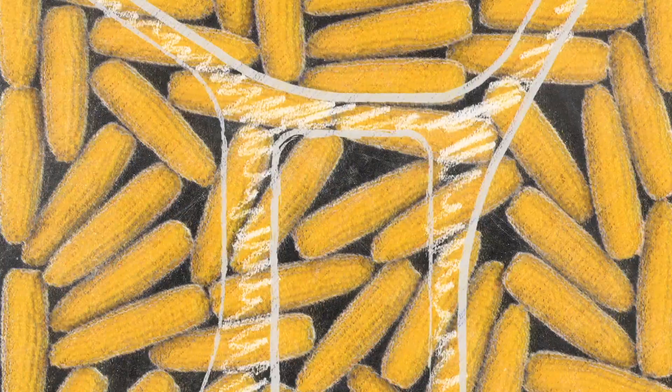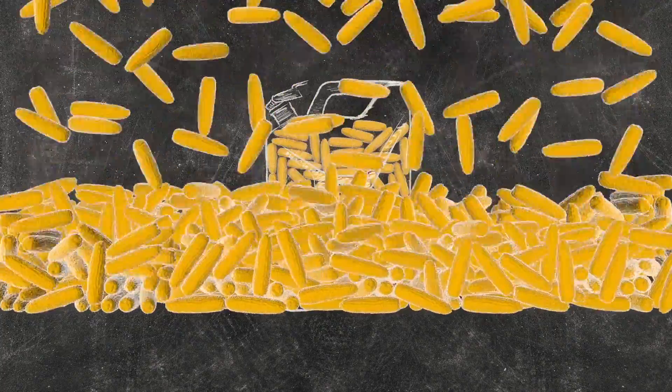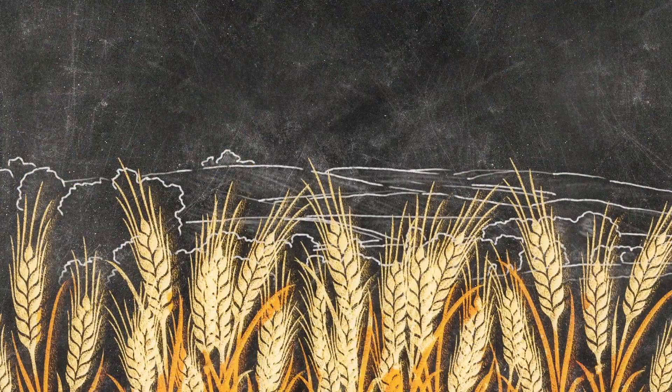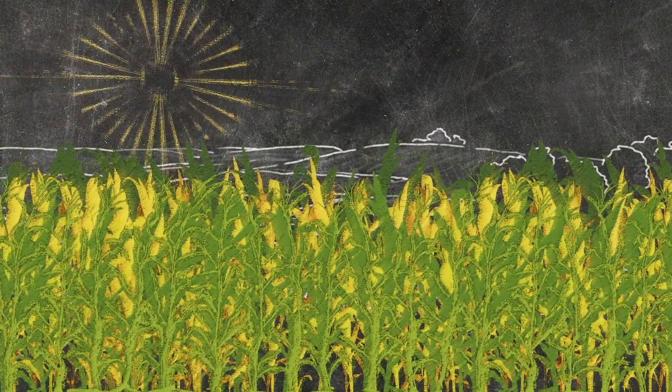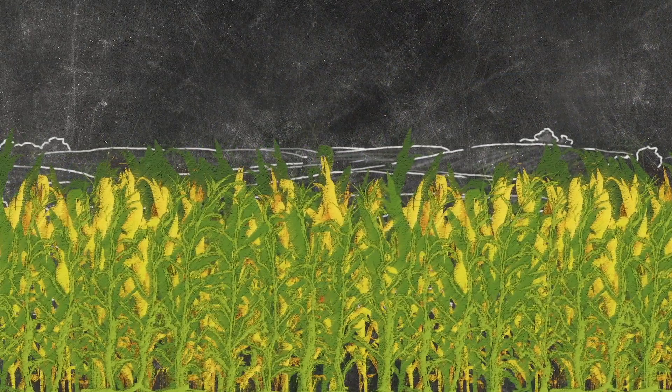With all the corn used for ethanol, we need more corn and other crops to maintain the food supply. Where do you grow those crops with all that land dedicated to ethanol?